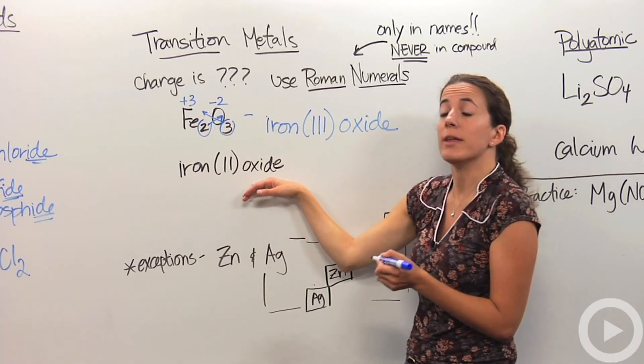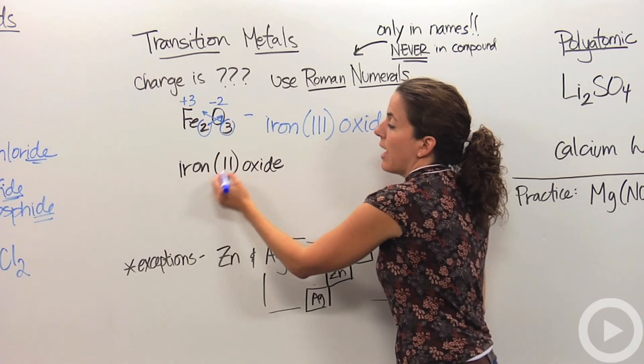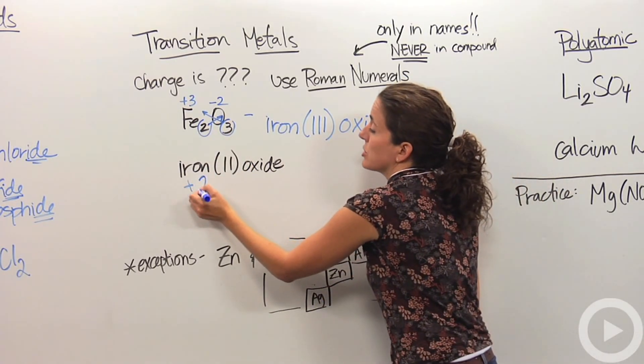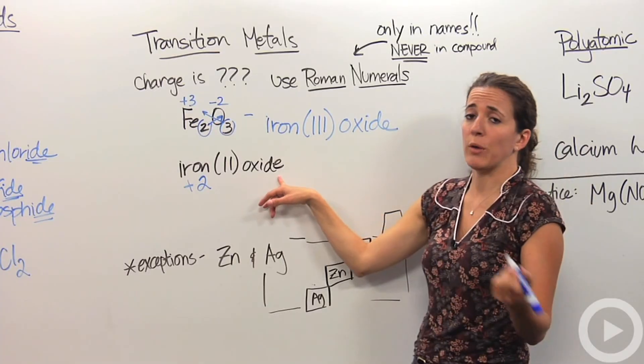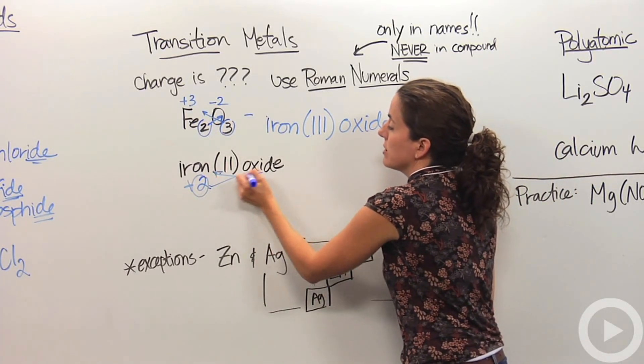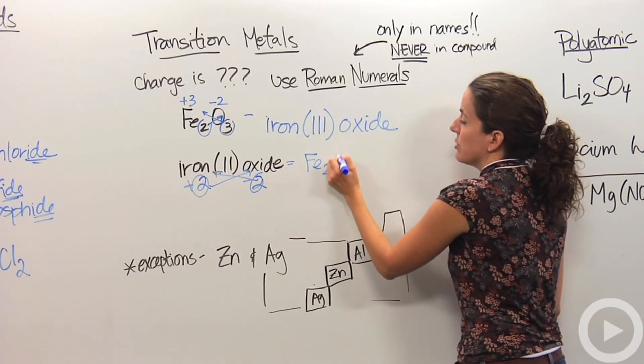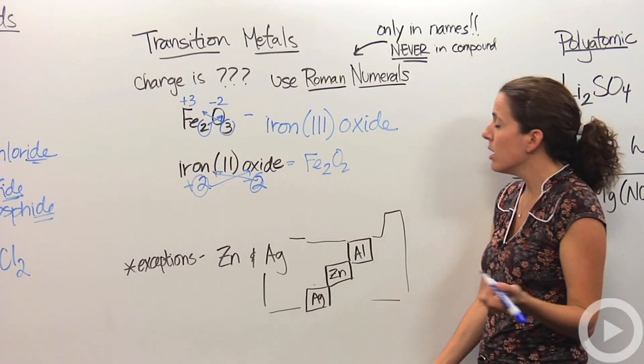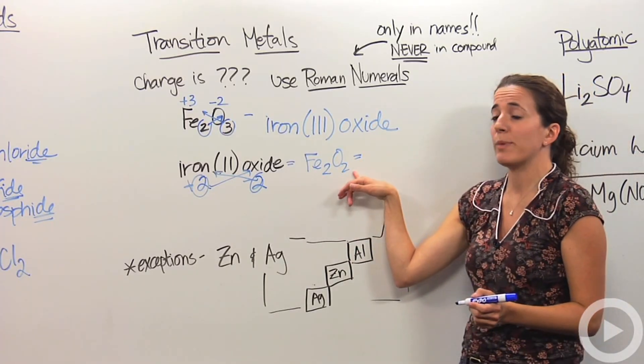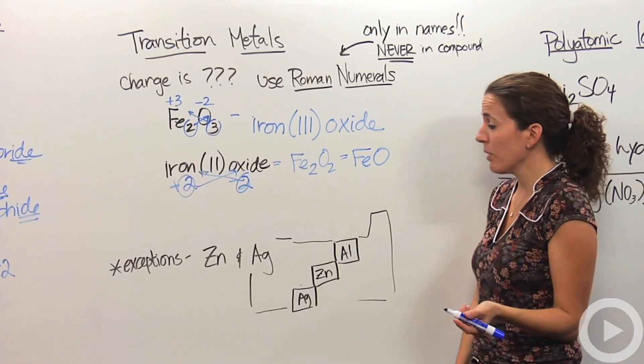Let's go backwards. Let's go from the name to the actual formula. We have iron(II), that's telling me this iron is not the plus 3 as we thought earlier. This iron is a plus 2 charge. Oxygen, as we know, is always going to be minus 2. So we just cross the numbers to give us our formula. We get Fe2O2. Does this work? This is not okay. We want to make sure this is the most reduced form as possible. So we're going to reduce that to FeO.